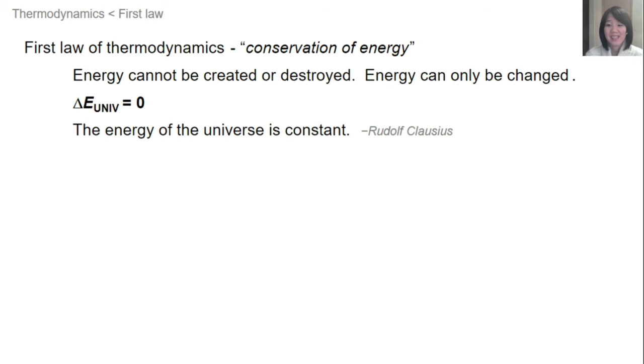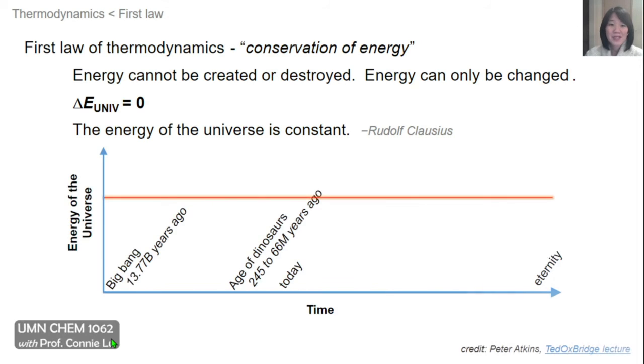Another way of putting it, in the words of one of the founding fathers of thermodynamics, Rudolf Clausius, is that the energy of the universe is constant. So, this plot here kind of shows the first law of thermodynamics, where we have energy on the y-axis, and all time, so from the big bang, through the age of dinosaurs, through today, and to eternity, no matter what, this will be a flat, constant line, because there will be no change in this energy.